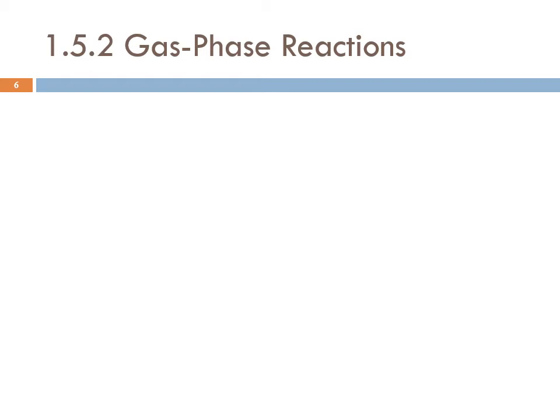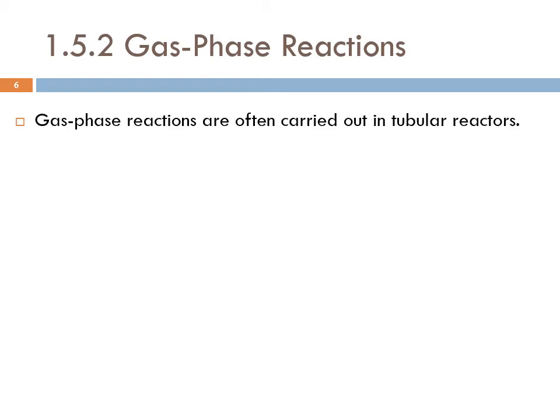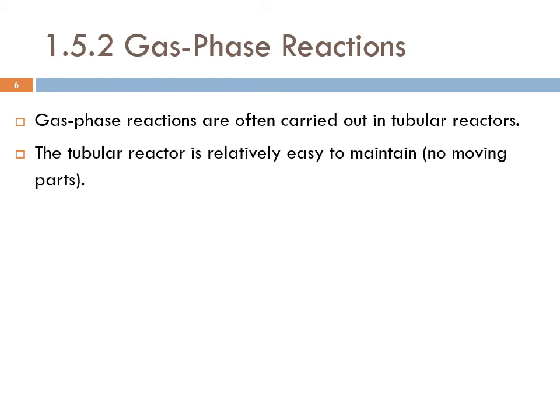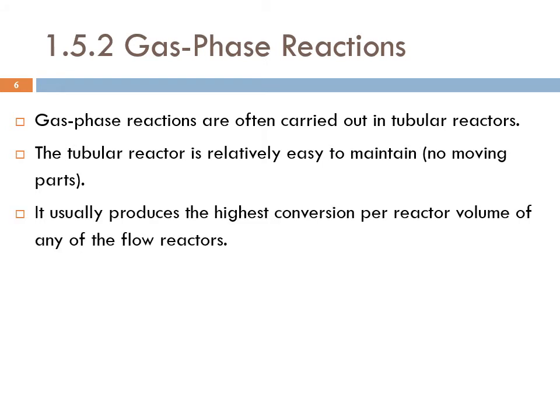Gas phase reactions are often carried out in tubular reactors. The tubular reactor is relatively easy to maintain because there are no moving parts — it's just a tube or cylinder. It usually produces the highest conversion per reactor volume of any of the flow reactors.